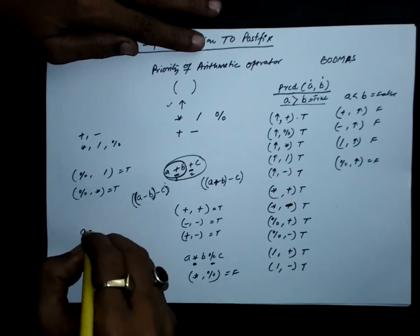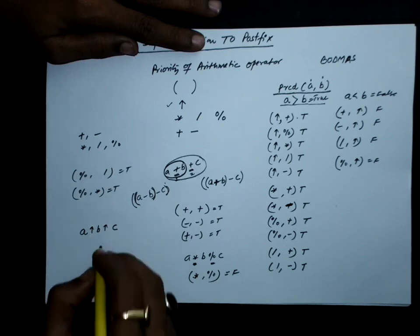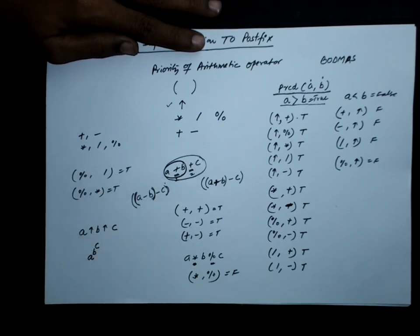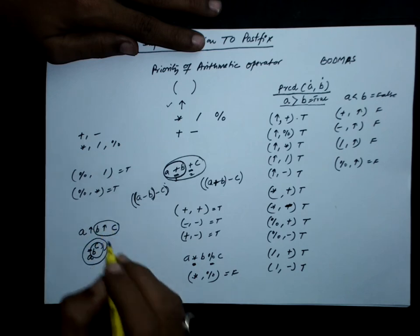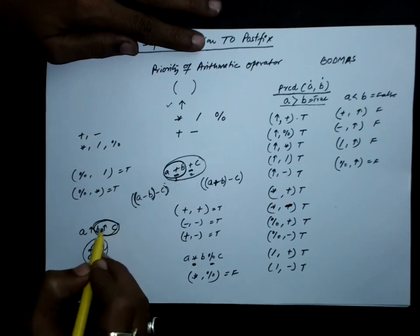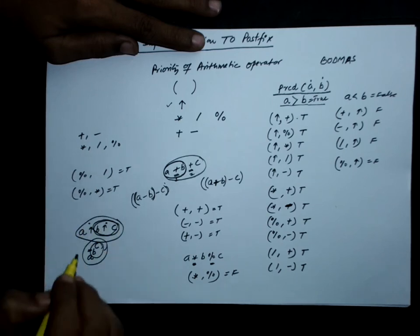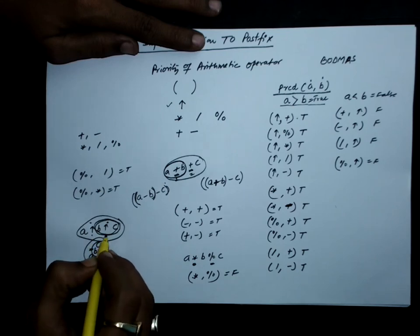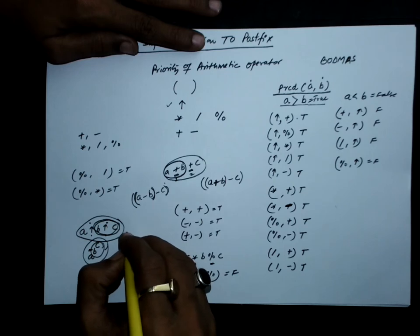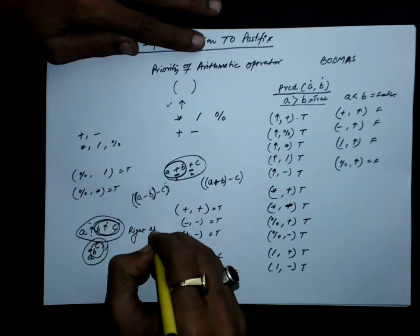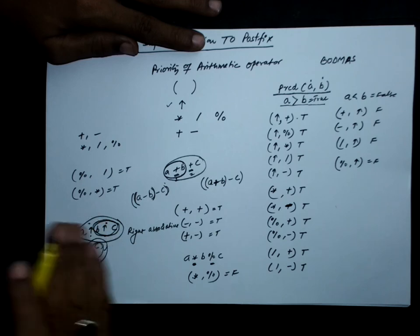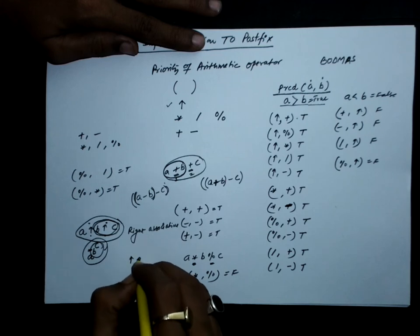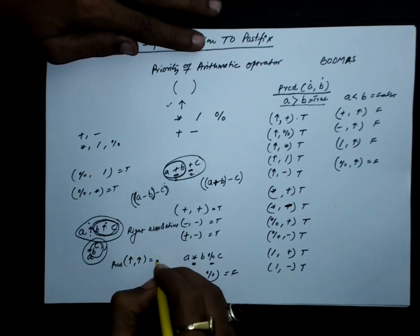Now consider the case A ^ B ^ C, i.e., A raised to the power of B raised to the power of C. Mathematically, we first solve B ^ C and then solve A raised to that value. This means the second exponent operation is performed first, so the first exponent does not have higher precedence over the second. In other words, the exponent operator is right-associative. If two exponent operators appear back to back, we first perform the rightmost one and then move left. So PRCD(^, ^) returns false.